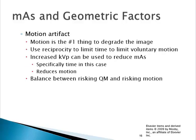Another way mass can affect geometric factors is if your time component is too long and you introduce motion. Motion is the number one factor degrading sharpness of recorded detail. You would want to use reciprocity to limit exposure time as much as possible. If you can't use reciprocity — increase MA and decrease time — then you could increase KVP to reduce overall mass, though in both cases you may introduce quantum mottle issues.